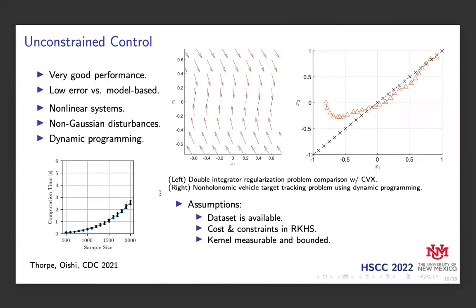We first demonstrate some preliminary results on unconstrained control based on prior work. In the first figure on the left here, we show a comparison of the kernel-based technique on a stochastic chain of integrators system when compared to the model-based solution computed via CVX. We can see in the vector plot of the controlled system that the solution we compute is very close to the true model-based solution. It's a little hard to see, but the blue arrows are the solution from CVX, and the orange arrows are our computed solution.